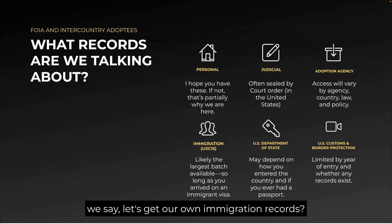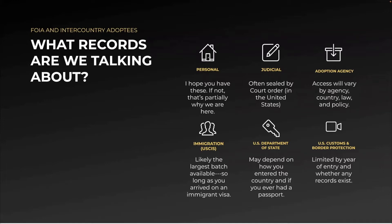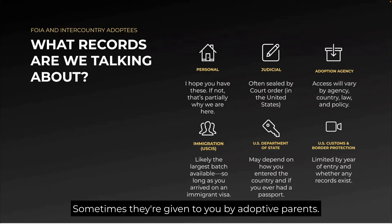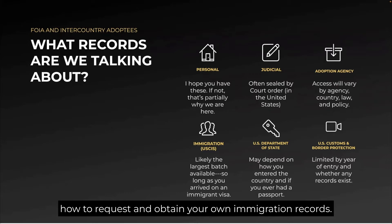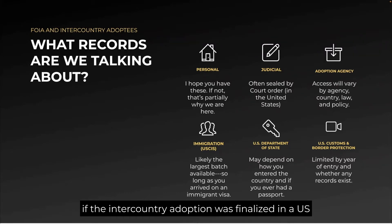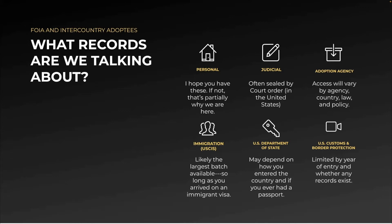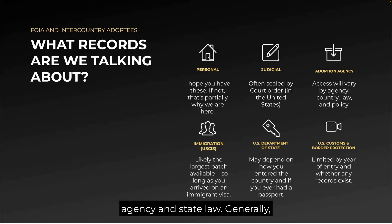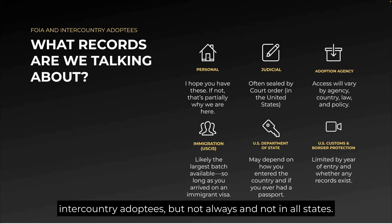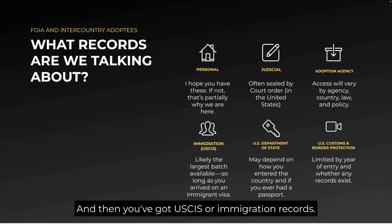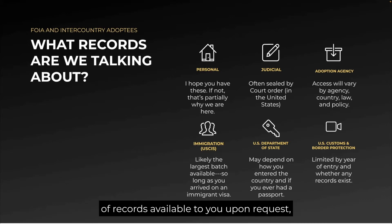What records are we talking about when we say let's get our own immigration records? You may have personal records already — sometimes they're given to you by adoptive parents. There are also judicial records, court records, if the inter-country adoption was finalized in a U.S. state court. There are adoption agency records, and access to those will vary by agency and state law. And then you've got USCIS immigration records — probably the largest batch of records available to you upon request, and that's what this presentation is about.